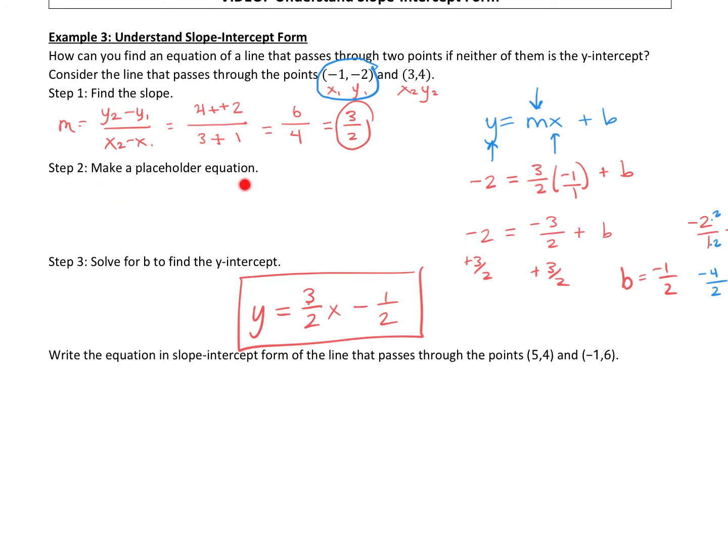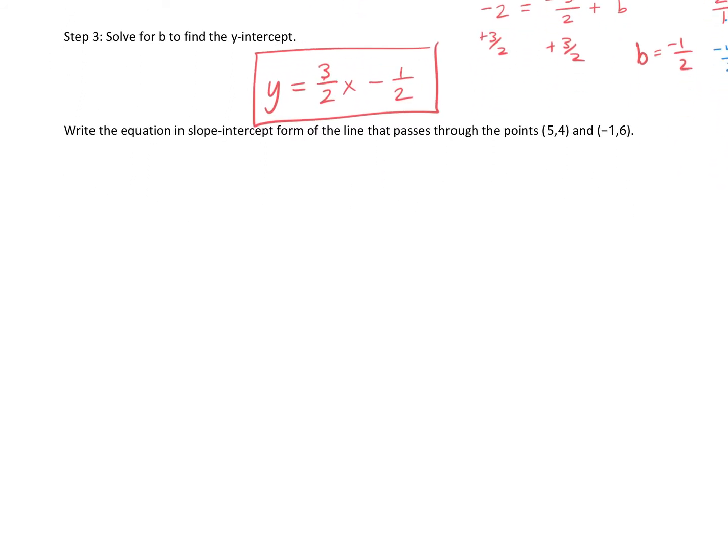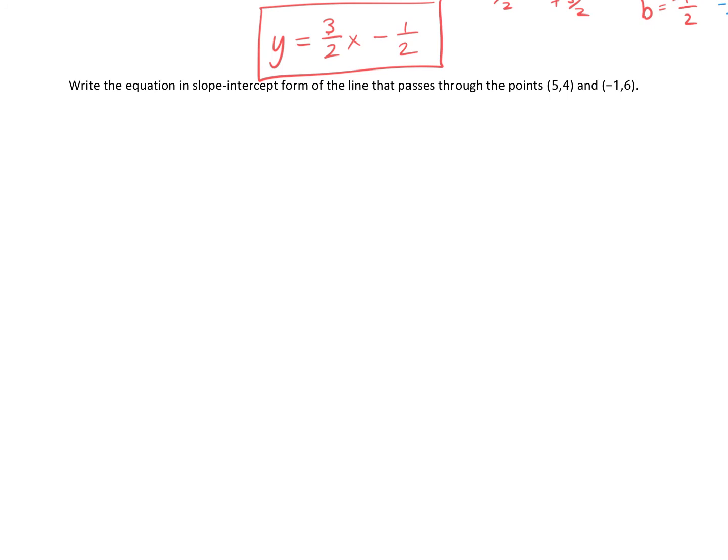I guess, maybe I didn't necessarily talk about the steps when I was doing them, but we found our slope. So we plug in our slope and one of our ordered pairs for the x and y. We solve for b, and now we have an equation. Okay, let's try another one. Just make sure that that process is making sense. So write an equation in slope-intercept form of the line that passes through the point 5, 4, and negative 1, 6. So first, do you have the y-intercept? We don't have the y-intercept, so we're going to have to go through that process again. We're going to find the slope first.